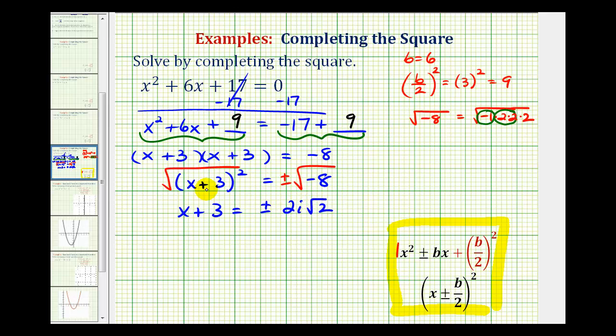And the last step here to solve for x, we'll subtract 3 on both sides of the equation. So we'll have x equals negative 3, plus or minus 2i square root 2. Remember we have two solutions here. One solution is x equals negative 3 plus 2i square root 2. And the other solution is x equals negative 3 minus 2i square root 2.